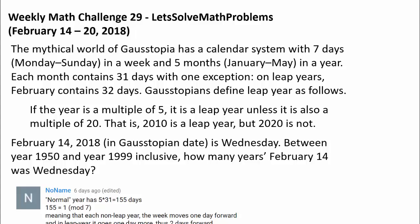Gaustopia has an interesting calendar system with 7 days, Monday through Sunday in a week, and only 5 months in a year. Each month contains 31 days, with one exception on leap years — on leap years, February contains 32 days.